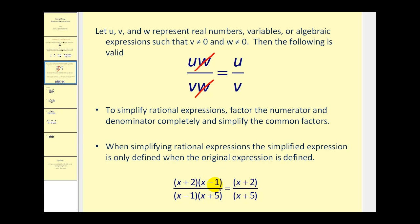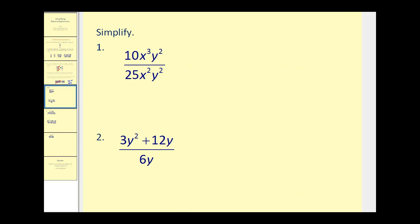Here's an example where this rational expression simplifies because we have x minus 1 in the numerator and x minus 1 in the denominator, so it simplifies to x plus 2 divided by x plus 5. This is only defined when x does not equal negative 5, but x also can't equal 1 because that would make the original rational expression undefined. Let's look at some additional examples, simplifying by writing them in factored form and looking for common factors.